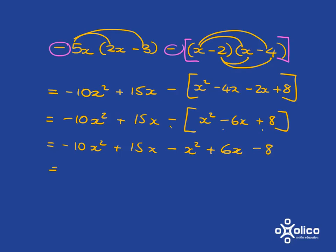And my very last step is then to combine like terms again. I've got a like term there and there. I've got a like term there and there. And so what I'm going to get is minus 11x squared. 15x and 6x is 21x. And then that little old minus 8 at the end.